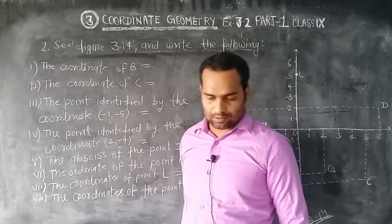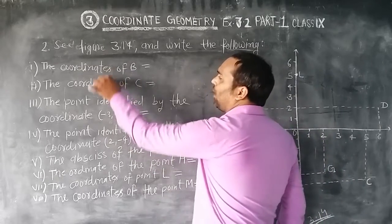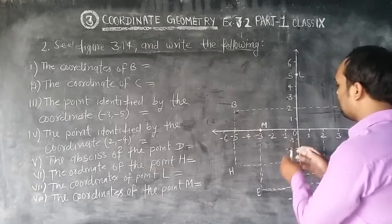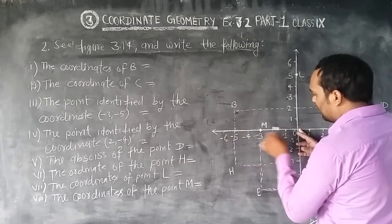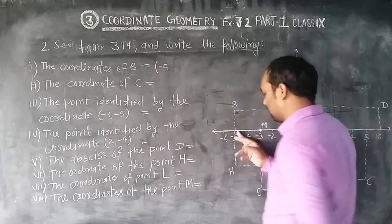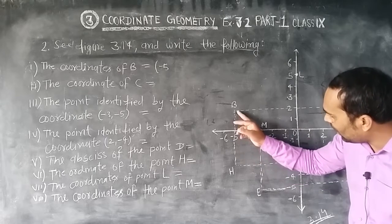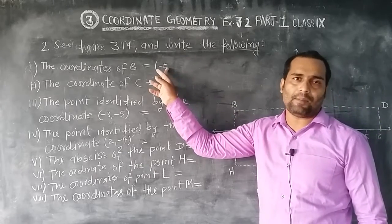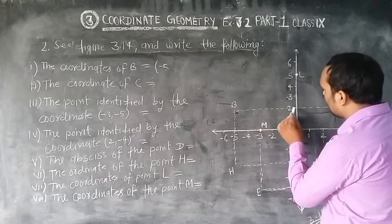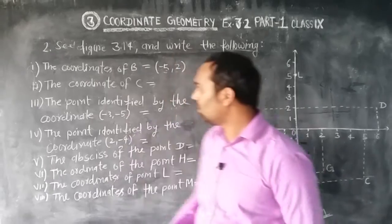First: the coordinates of point B. Point B is located here. Looking at where the vertical line touches the x-axis, it touches at minus 5, so the x-value is minus 5. And the y-value — the line touches at 2. So the coordinate of B is (minus 5, 2).